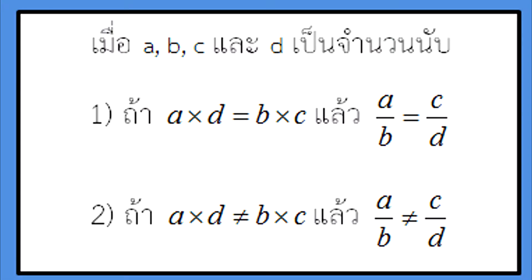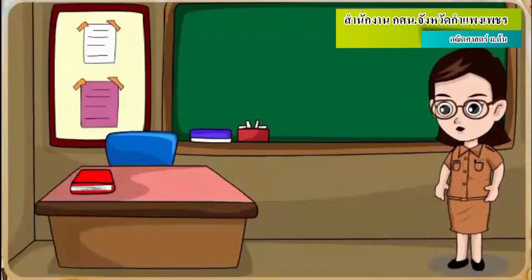We can do this with a, b, c, and d. If a, b, c, and d — we can verify the equality of ratios using a, b, c, and d through cross-multiplication.